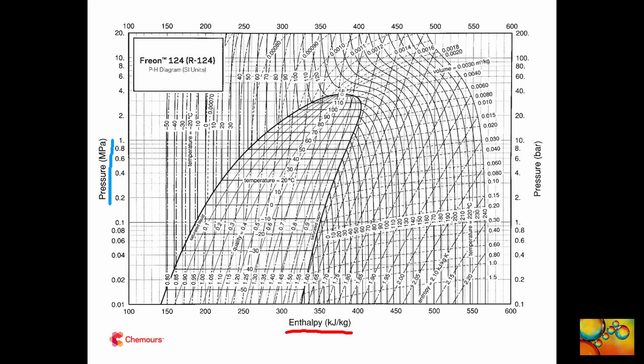The first observation is that the vertical axis represents the pressure and the horizontal axis represents the enthalpy. An isobaric process — that is, a process that happens at constant pressure — is represented by a horizontal line. An isoenthalpic process, a process that happens at constant enthalpy, is represented by a vertical line.